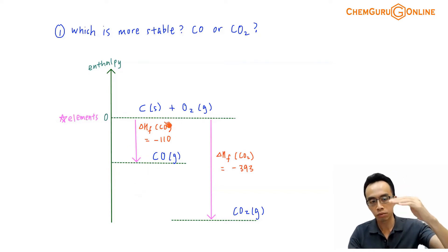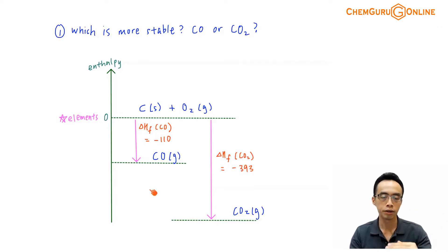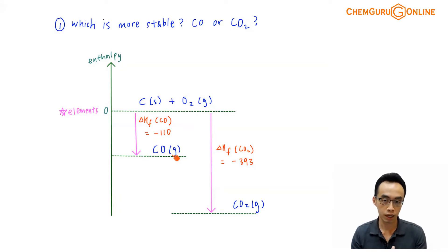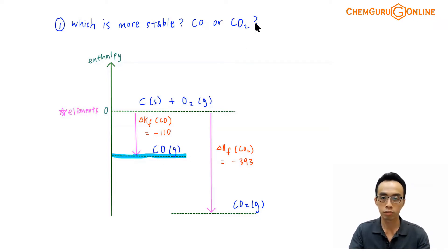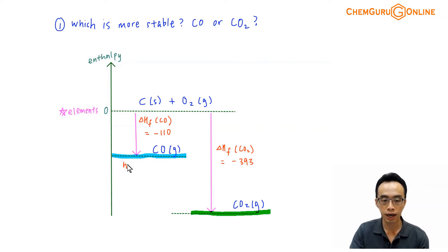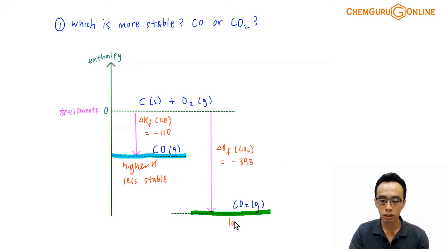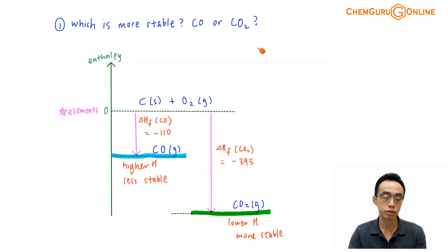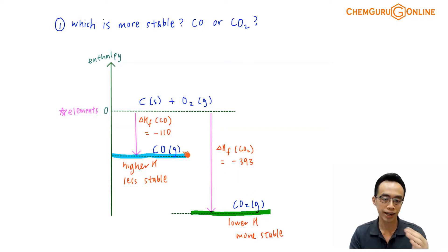It's actually fairly simple. The higher up you are, the less stable you'll be. The lower down you are, the more stable you'll be. So if I want to compare carbon monoxide versus carbon dioxide, clearly carbon monoxide is higher up in terms of enthalpy and carbon dioxide is lower down. This means that carbon monoxide, since it has a higher enthalpy, is less stable. Whereas carbon dioxide, with a lower enthalpy, will be more stable. So carbon dioxide is more stable than carbon monoxide.